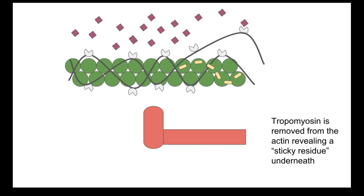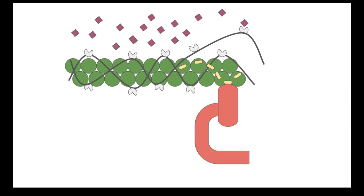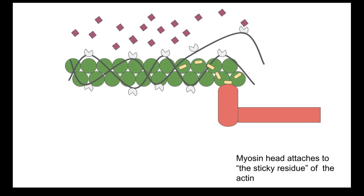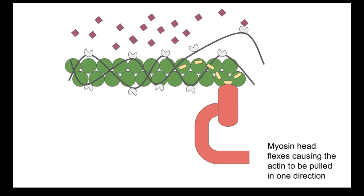You peel off tape, it leaves that sticky residue, and the myosin head gets stuck to that sticky residue. After the myosin head attaches, it kind of flexes — imagine your hand grabbing a rope, and then your arm bends and pulls the rope in one direction. So the myosin head attaches to the actin, flexes the myosin, and causes the actin to be pulled in one direction.